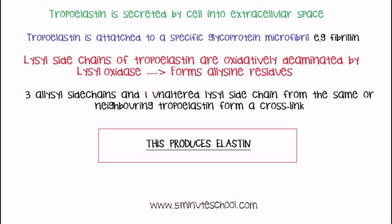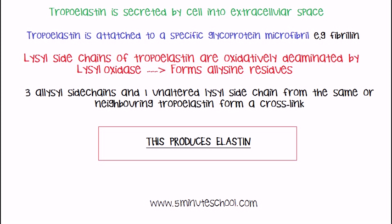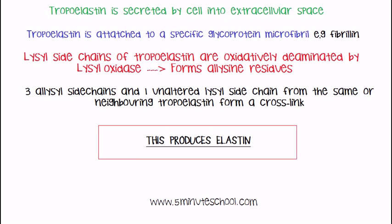Three of these allysine side chains — which have been oxidized by lysine oxidase — along with one unaltered lysine side chain from the same or a neighboring tropoelastin molecule, come together to form a cross-link. This results in mature elastin fibers. In the next video we're going to be discussing alpha-1 antitrypsin. Thanks for watching.